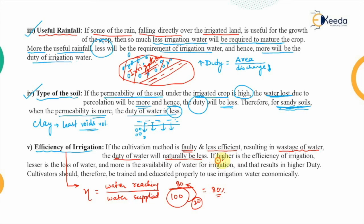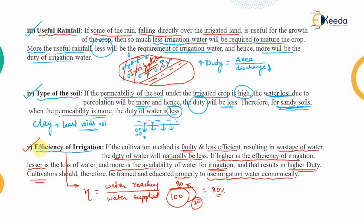We increase the efficiency of irrigation by employing the latest technologies in irrigation and minimizing losses. The lesser the losses, the more will be the availability of water for irrigation purposes, resulting in higher duty of the water. Therefore, cultivators and farmers should be trained and educated properly to use irrigation water economically and efficiently, because that will increase the coverage of the water in the land. So that was the last factor — efficiency of irrigation affecting the duty.